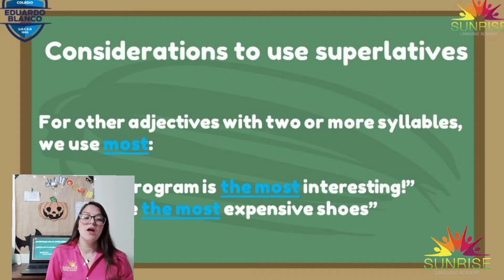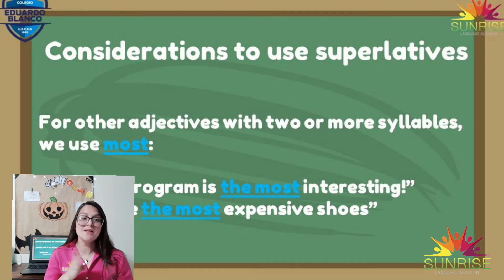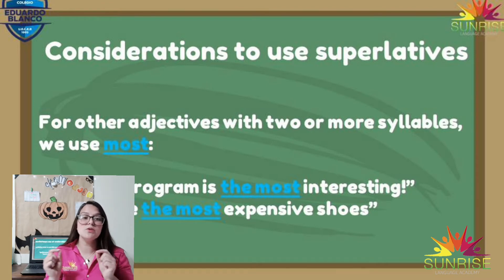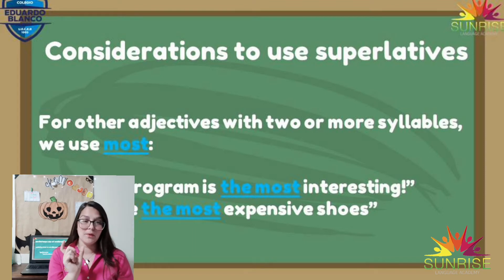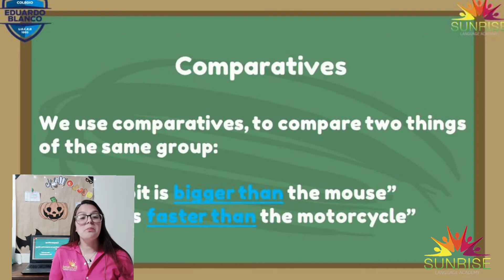So superlatives have considerations depending on the number of syllables: one syllable, add -est at the end — tallest, biggest, fastest. More than two syllables, use 'the most.' And always remember to place the article 'the' before the word. Now, the comparatives — we use them to compare two things.